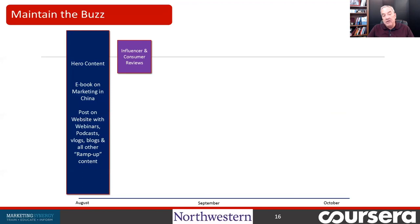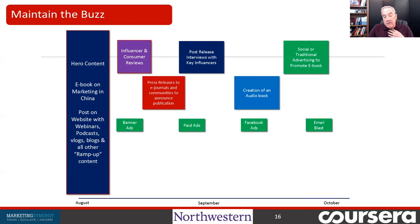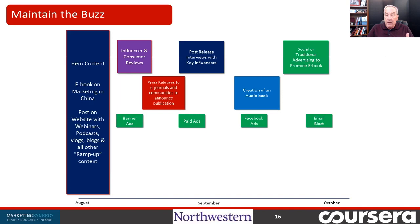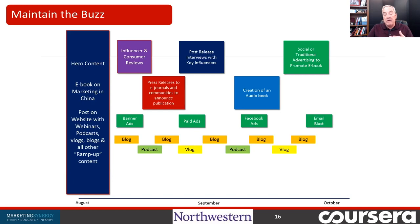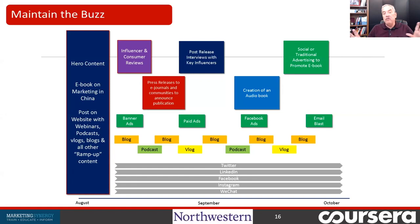On the other side, once I've introduced the ebook, I do the same thing: ask influencers for reviews and ratings, do a post-release press release, do post interviews with key influencers about what they thought of the book, create an audio book, do social or traditional advertising, banner ads, paid Facebook ads, email blasts, blog on it, podcast on it, do a video log. The key is you want to maintain the buzz for as long as you can. Think about a hero event as something awesome you're investing in — you have the ramp up, the maintain, and that becomes a huge part of your calendar.